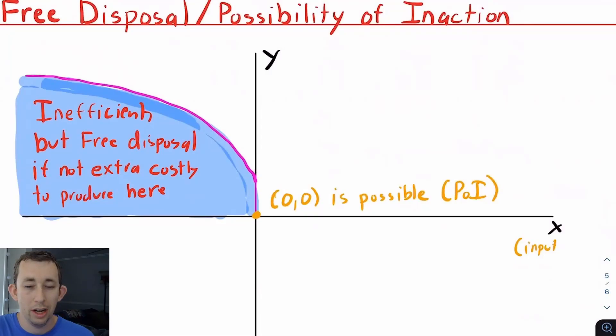For our last two production set properties, we're talking about free disposal and the possibility of inaction. Possibility of inaction is exactly what it sounds like. You're asking, is it the case that the point (0,0)—not using any inputs and not getting any outputs—is that a possibility on your frontier? Is that something that you can do? That's the possibility of inaction.